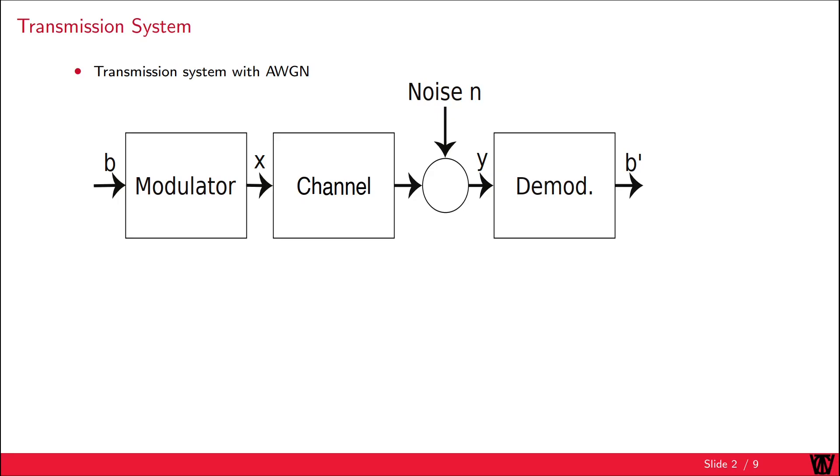First, we have to introduce our basic transmission system with an additive white Gaussian noise channel. At first the bits B are mapped onto a transmit symbol X. Then the symbol is transmitted over the channel where noise is added. Consequently we have our received symbol Y which can be demodulated to the detected bits B'. The received symbol Y is given by the convolution of the channel with the transmitted symbol plus the noise. Note that the convolution can be replaced by a simple multiplication for flat fading channels.